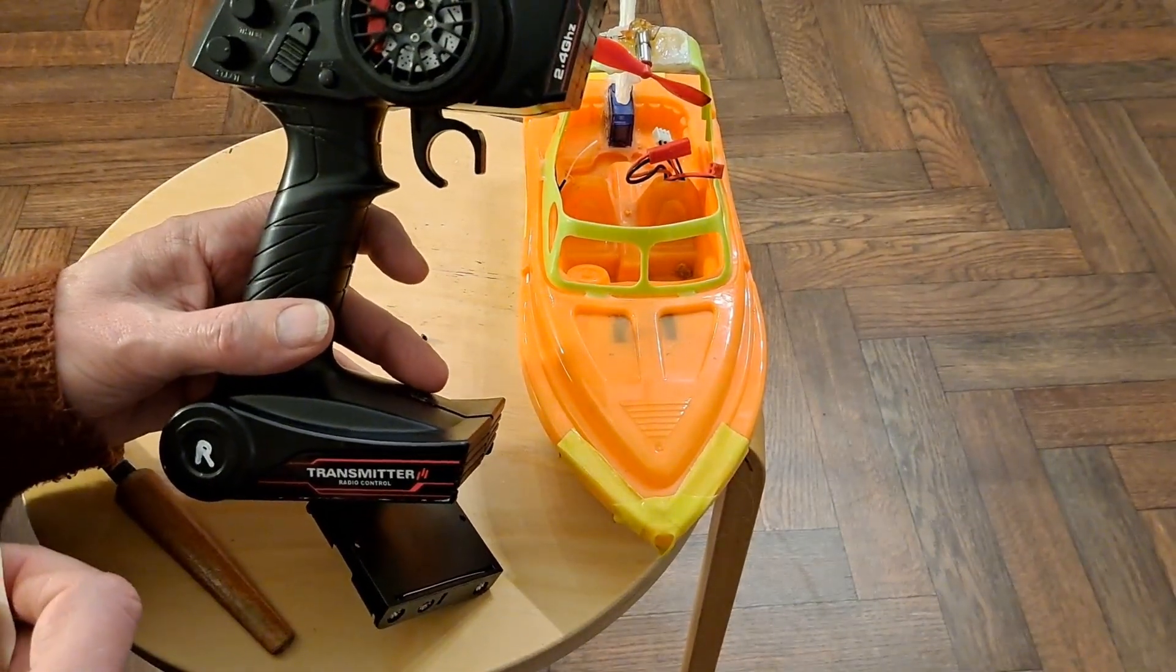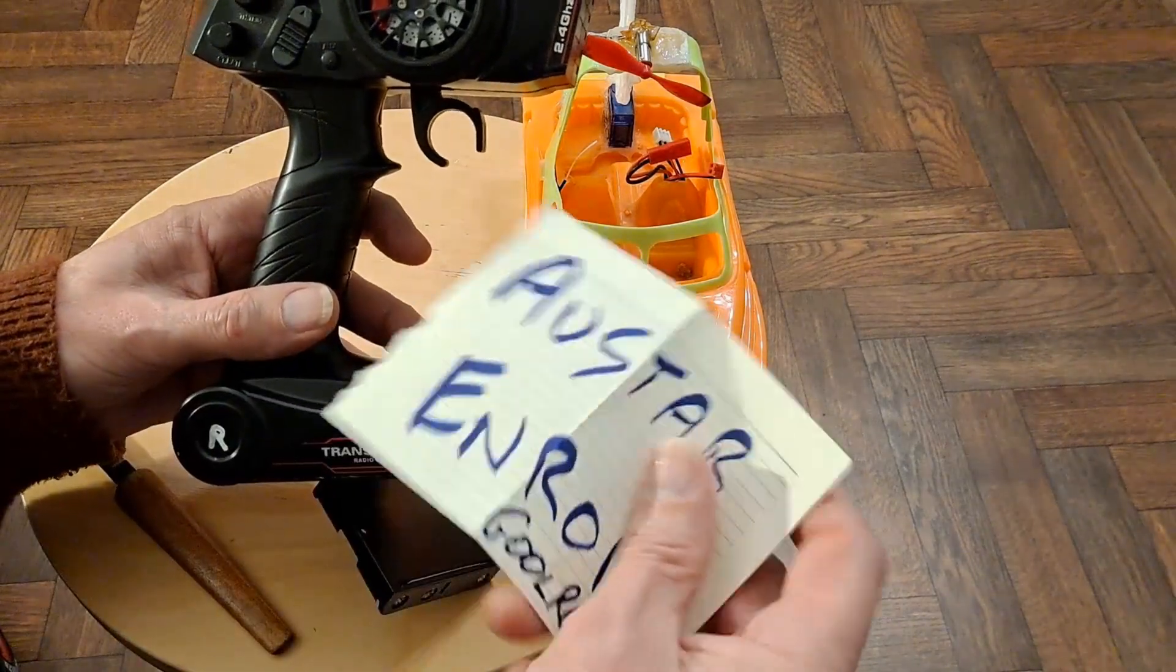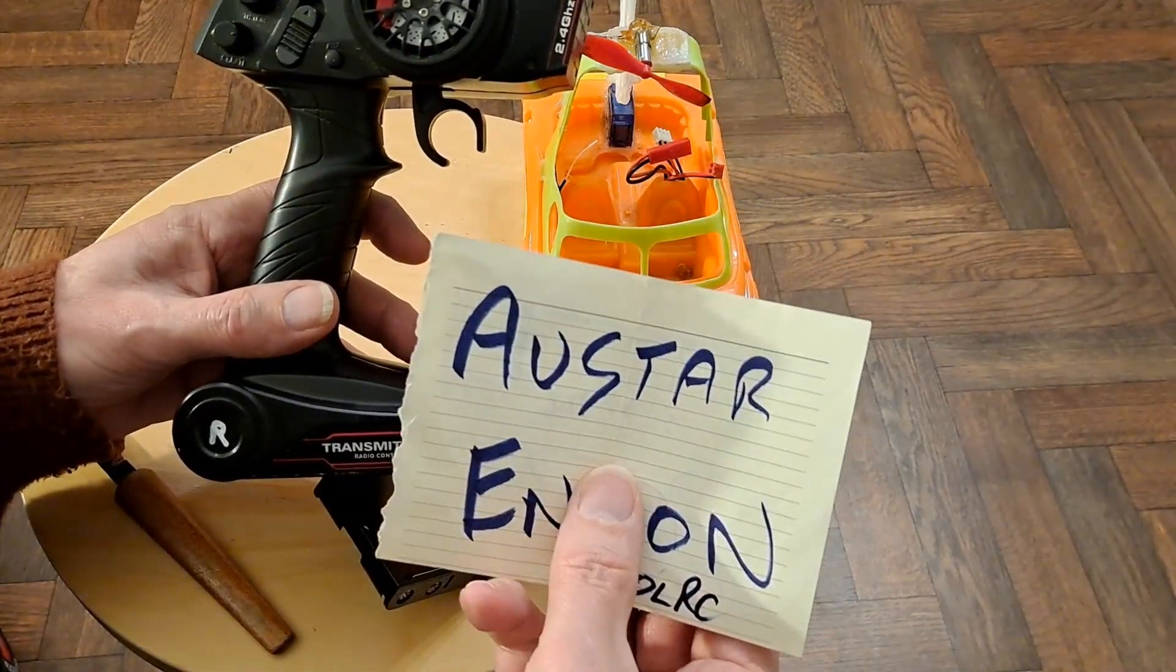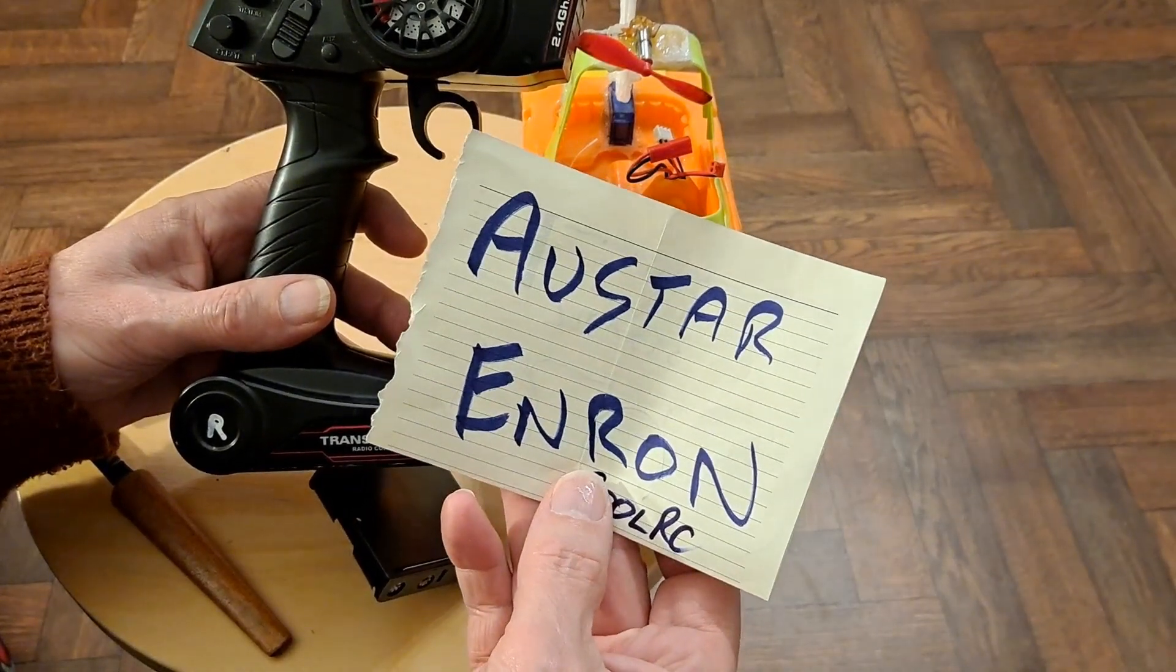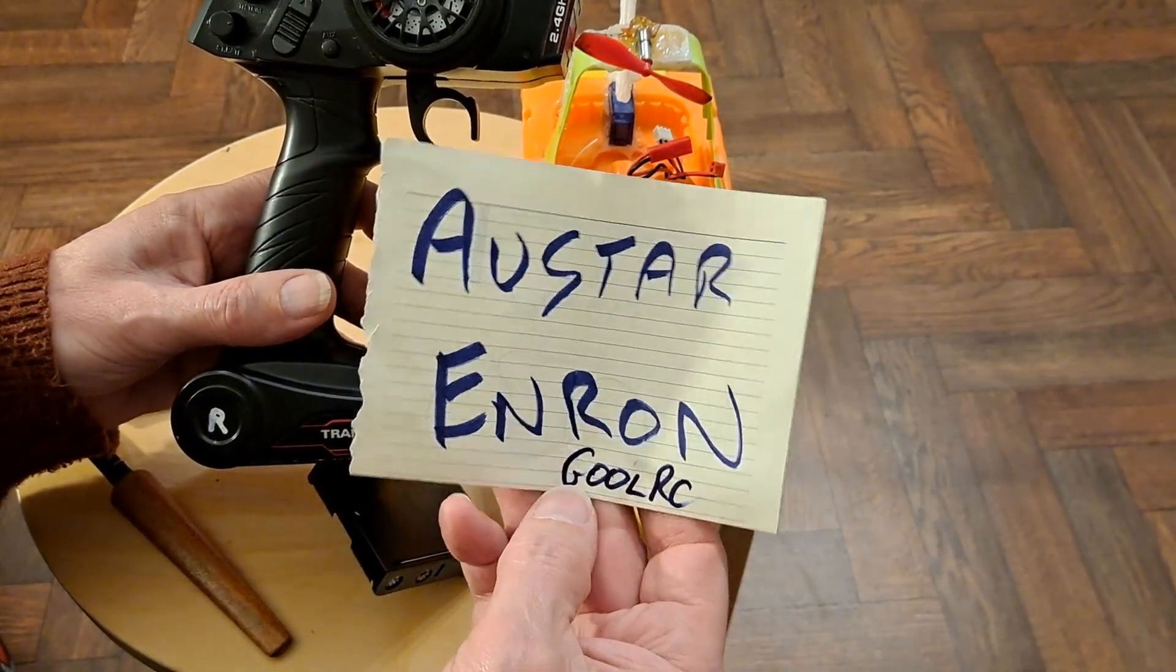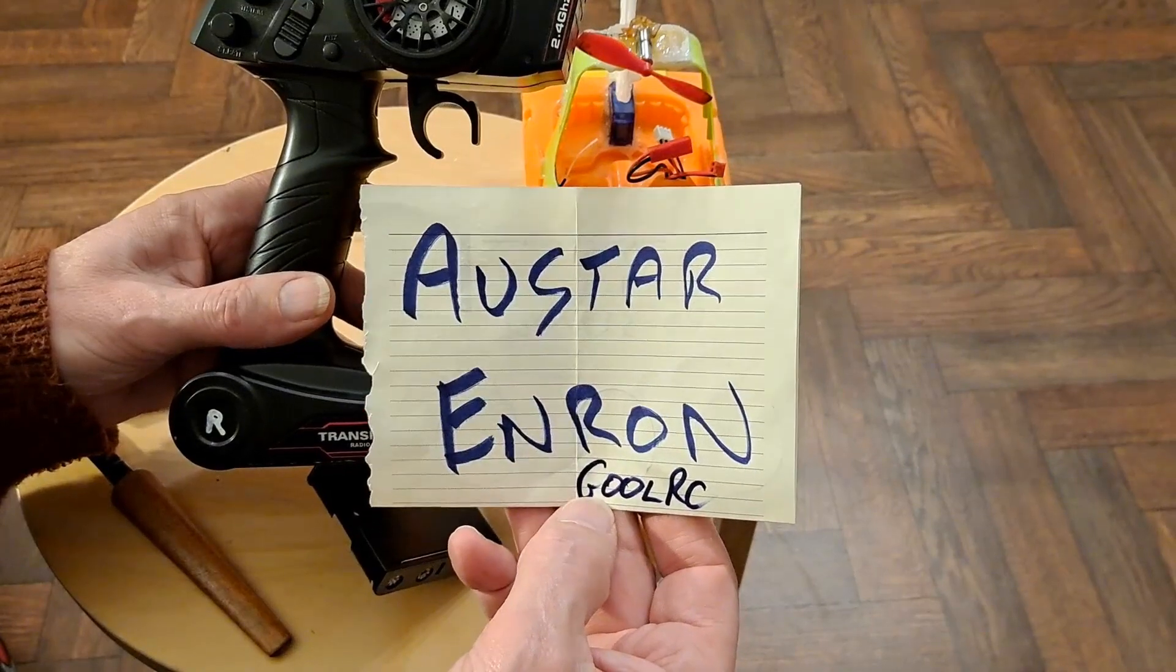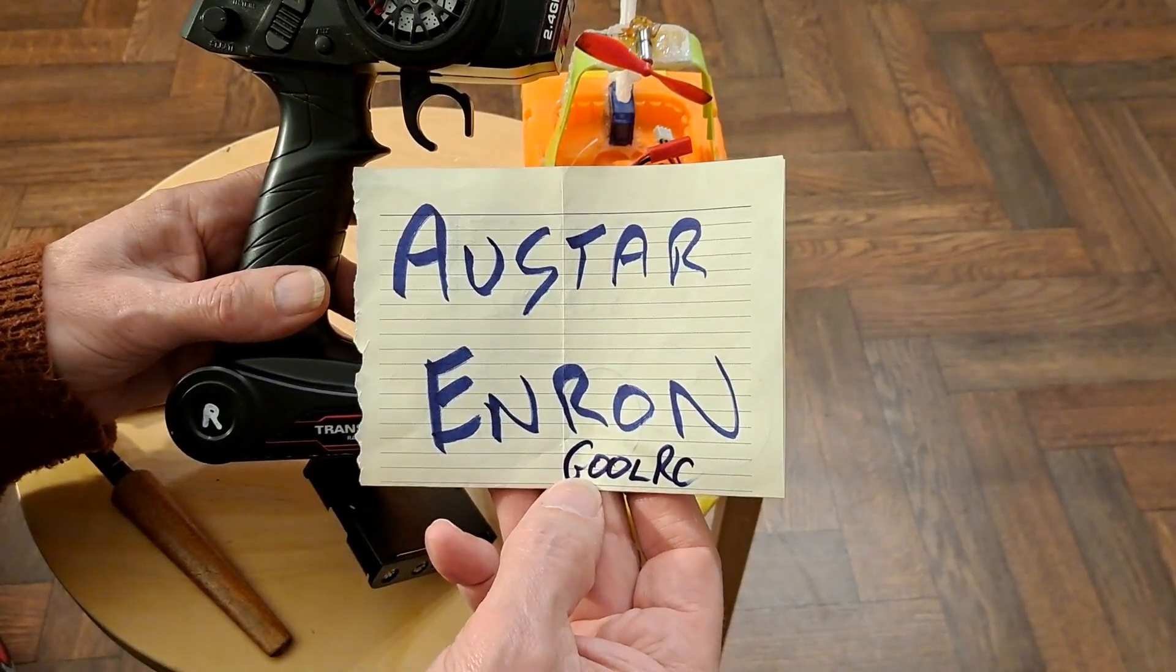In fact, I've got two of them, I think. Originally when I bought it, it was an All Star, but it also seems to be identical to Enron. And on AliExpress, it was even labelled GOOL RC.